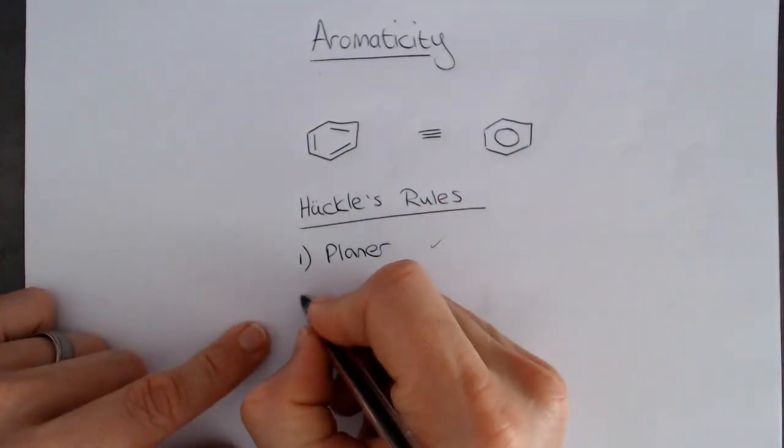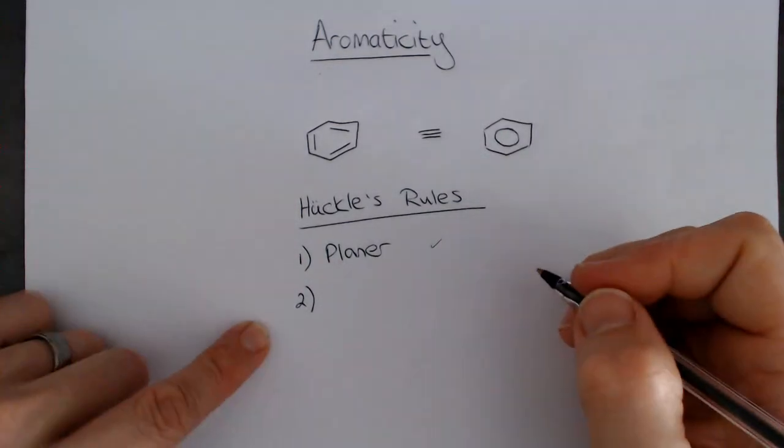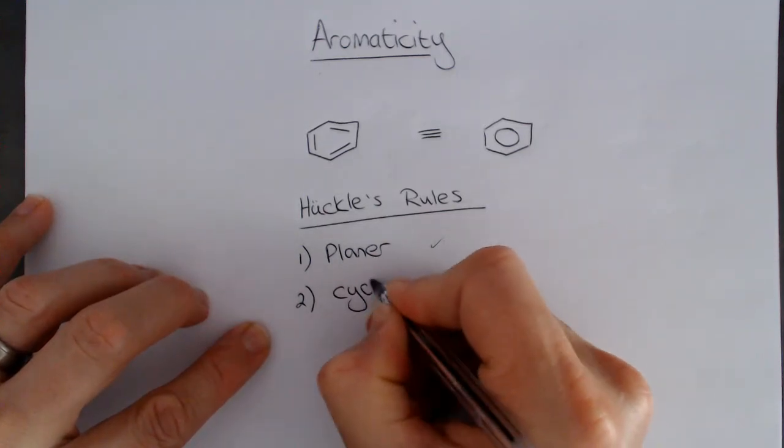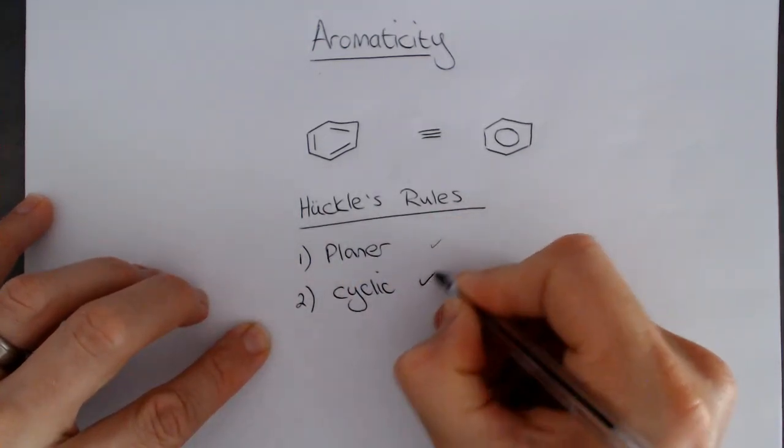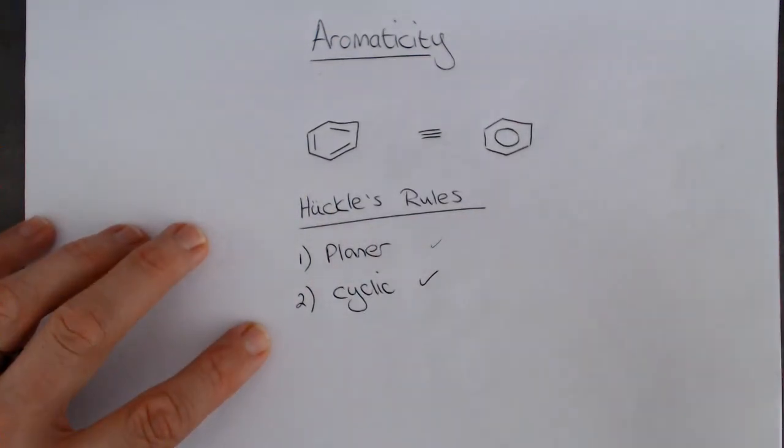The second rule is that it must be a cyclic system as well. So it must be planar, and it must be cyclic. And, of course, benzene we can see as a cyclic molecule. So that's fine.